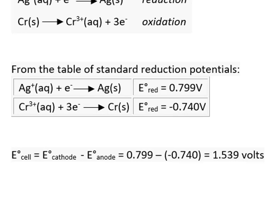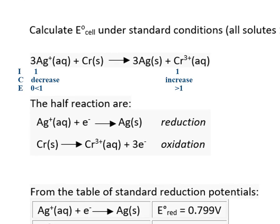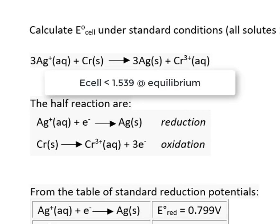E°cell at standard conditions is 1.539 volts. This is highly product favored. I want to point out again that the reaction begins with 1 molar concentrations of all solutes. But those concentrations of solutes change as the reaction proceeds in the forward direction, producing products. The voltage decreases until equilibrium is reached.